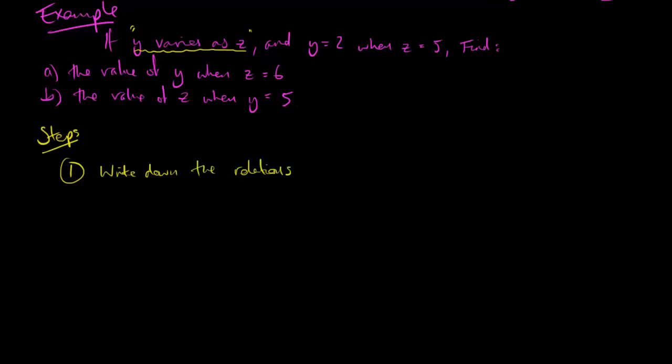So, how do we solve it? Well, first of all, write down the relationship between the two variables. And that's going to be something with k in. So, if y varies as z, if they're directly proportional, I know, therefore, that I can write y equals k times z. So, y equals kz. I don't know what k is at this point, but I know that I can write that, and k is some number.